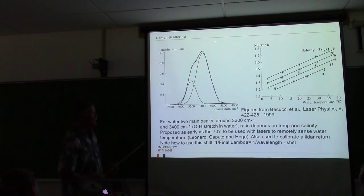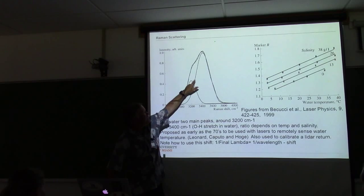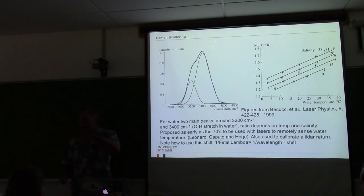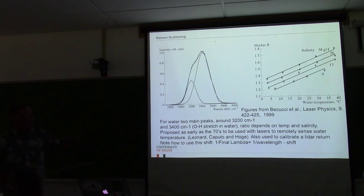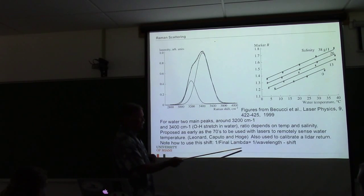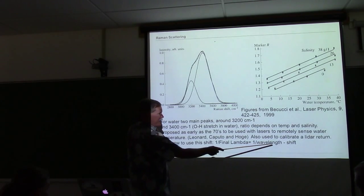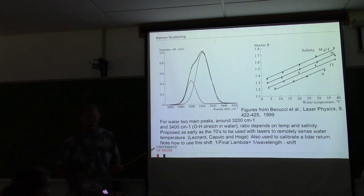As early as the 1970s, Hogue and Caputa said you'd use the difference in these two peaks in a LIDAR system to measure the temperature or salinity of the water you're flying over. In general, people use Raman scattering for calibration of their fluorescence LIDAR system, because it's a fairly constant thing. The equation is: one over the final wavelength equals one over the original wavelength minus the shift.